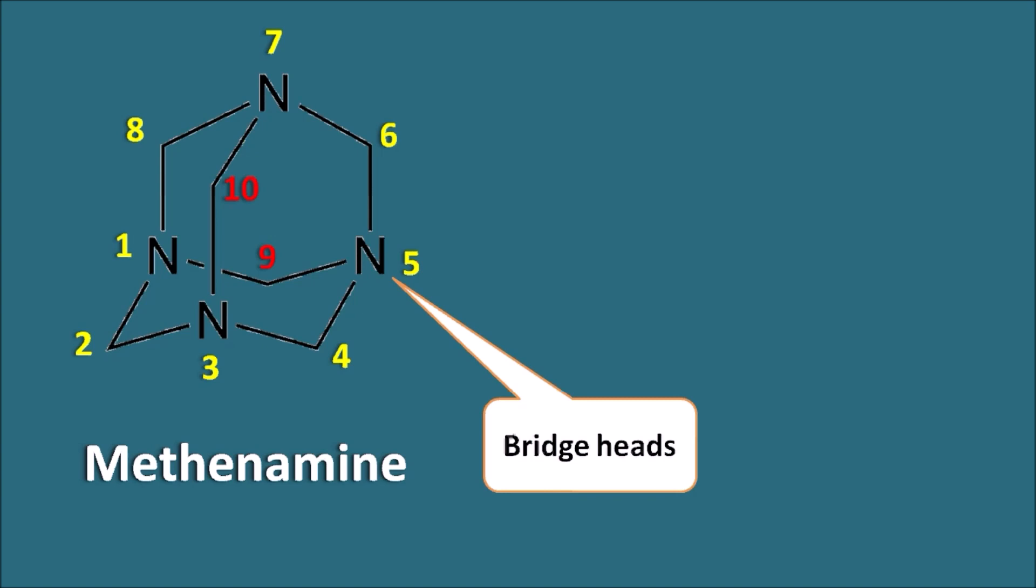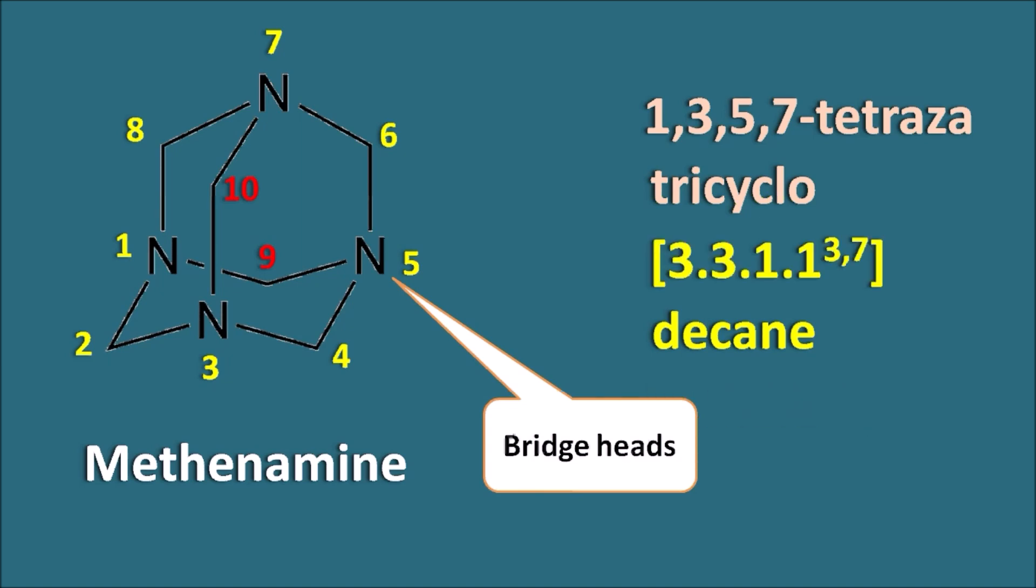This is nine and this is ten. So totally it has ten atoms, so it is called as decane. And here the carbons are replaced by nitrogens at the first, third, fifth, and seventh positions, so it is called as 1,3,5,7-tetraaza. Finally, the ring system is tricyclo because three cycles are fused, and the bridge can be represented as 3.3.1.1(3,7). This is the name of the Methenamine.